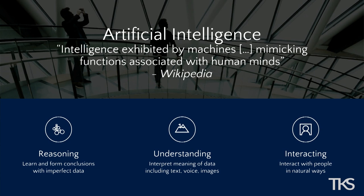Reasoning is basically looking at data and trying to learn and form some conclusions around that data set. Understanding is about interpreting the meaning of data — it can be voice data, text data, images, anything. And the third piece is interacting: how artificial intelligence is actually able to interact with human beings in natural ways. We know we're still not there yet. I have an Alexa at home — the most she can do is tell me the weather and traffic and play a song on Spotify, but I'm hopeful we'll have more meaningful conversations in the very near future.